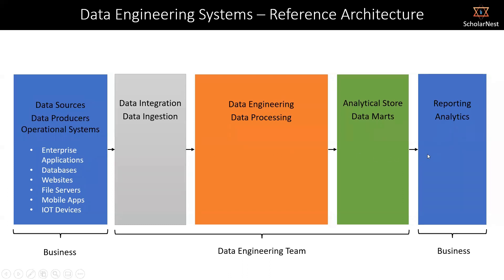That's what the data engineering team facilitates — the flow of data from the left side to the right side is managed by the data engineering team. That's the kind of application we develop. You look at any data engineering team — what they do on a day-to-day basis is build applications to bring data from the left side to the right side. We collect data from these guys and facilitate that data to the reporting and analytics business units.